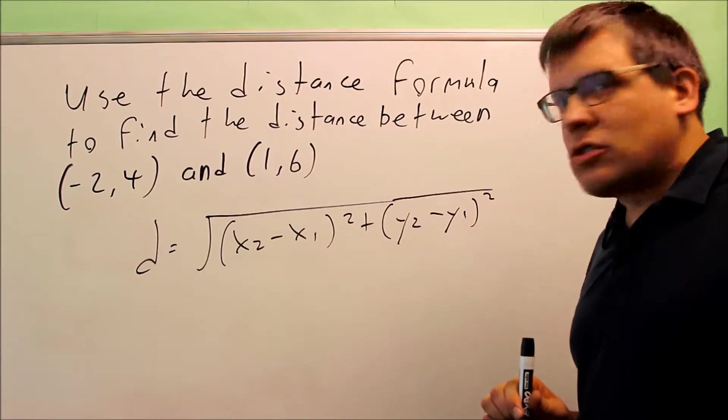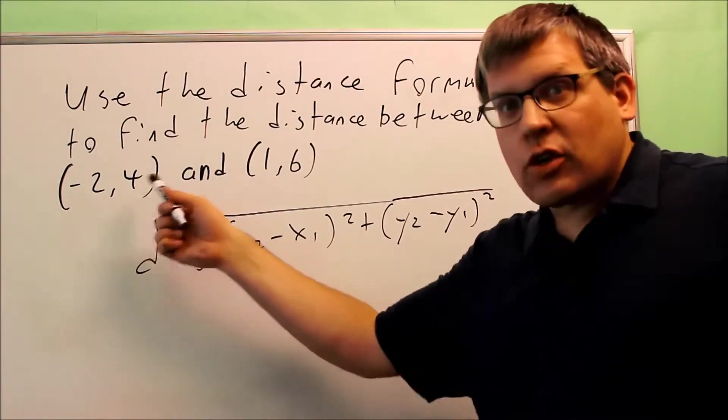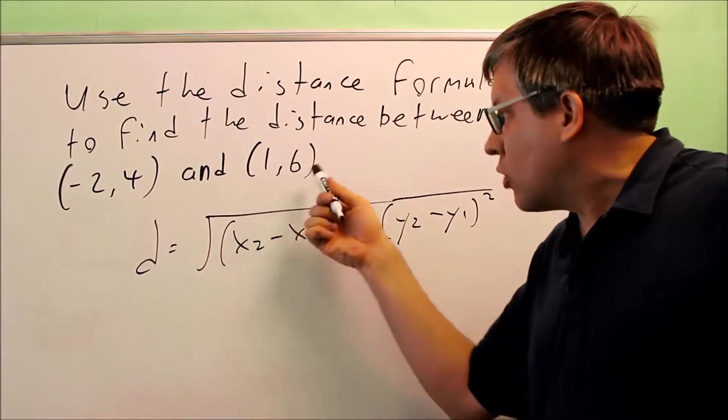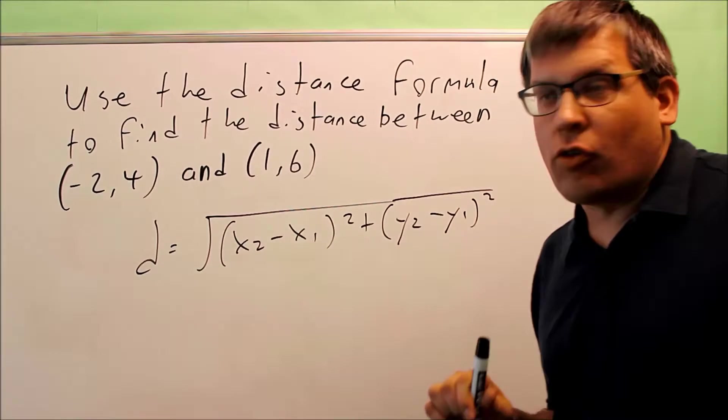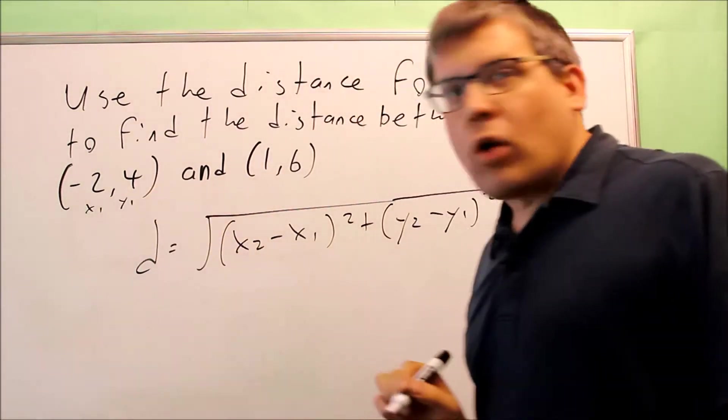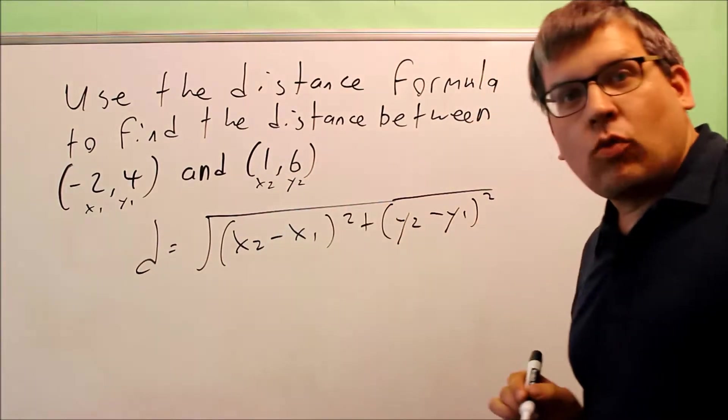For these points that are given to us here, we can label them any way that we want to. We can label this one x₁, y₁, or we can label this one x₁, y₁. We just can't mix and match. We can't do x₁, y₂, and so forth. So I'm just going to pick x₁, y₁ here, and then this one I'm going to use x₂ and y₂.